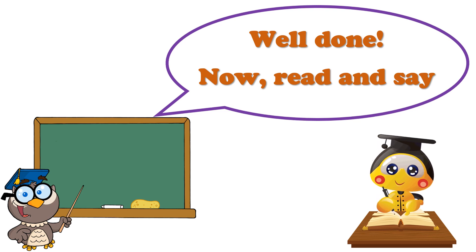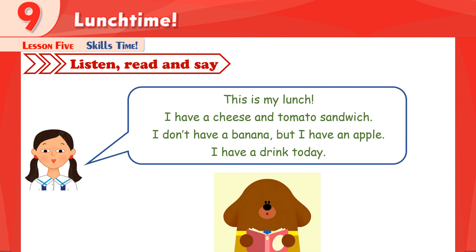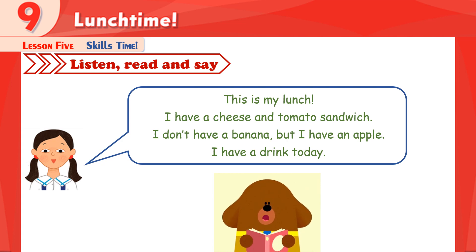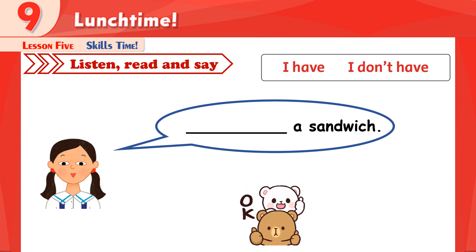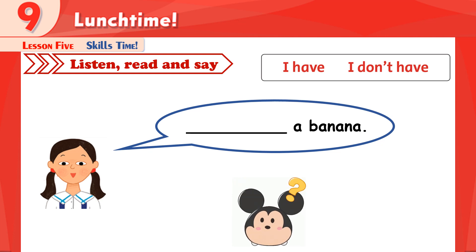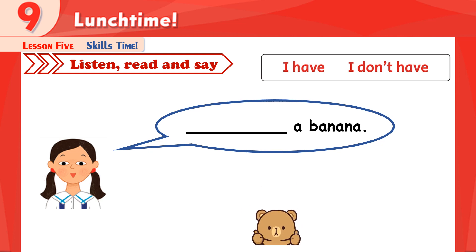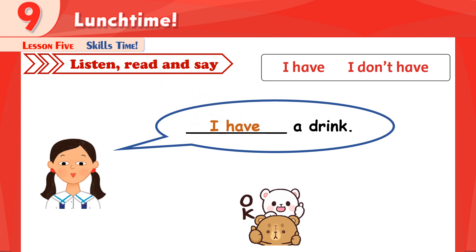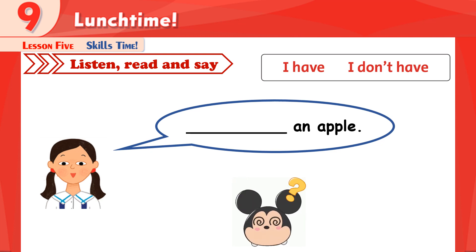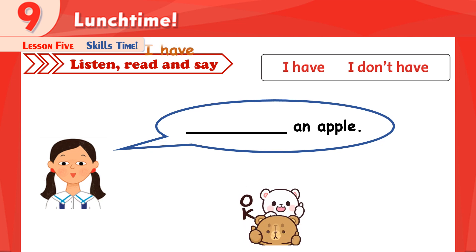Move to the second student — a nice girl. Let's read and say. Let's fill in the blank with 'I have' or 'I don't have.' 1. I have a sandwich. Well done. 2. I don't have a banana. Very good. 3. I have a drink. Good job, everyone. 4. I have an apple. Excellent.